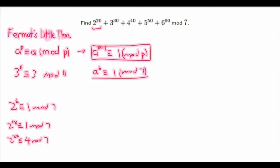Now, let's look at the next one. 3 to the power of 30. We see that 3 to the power of 6 is 1 mod 7. So, 3 to the power of 30 is congruent to 3 to the power of 6, with all that to the power of 5, which is congruent to 1 to the power of 5, which is congruent to 1 mod 7.